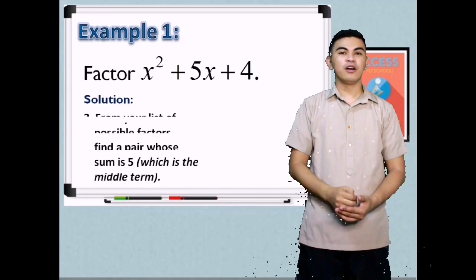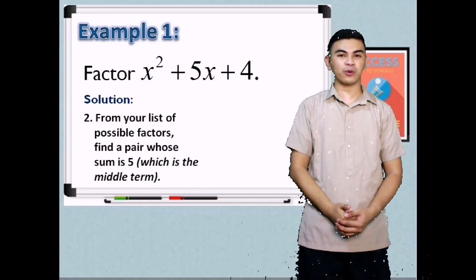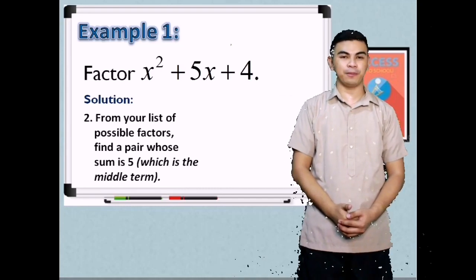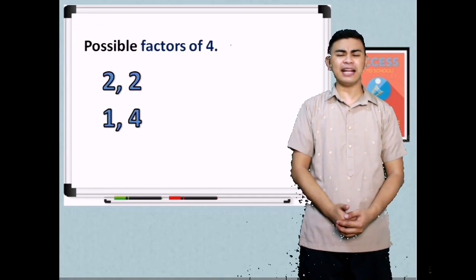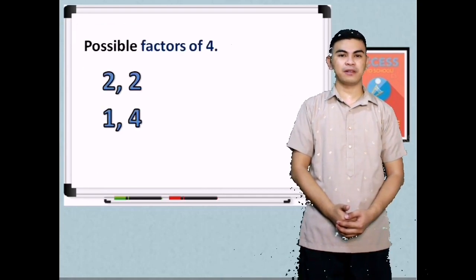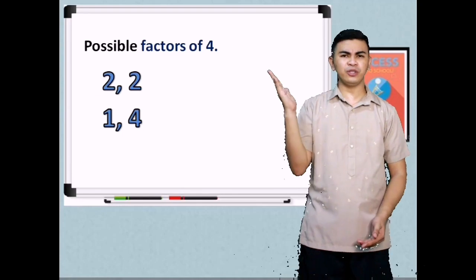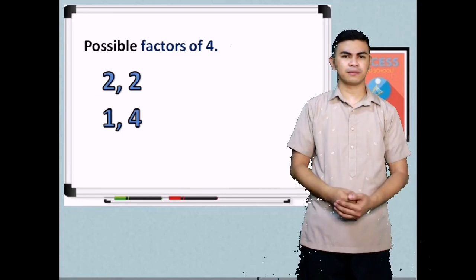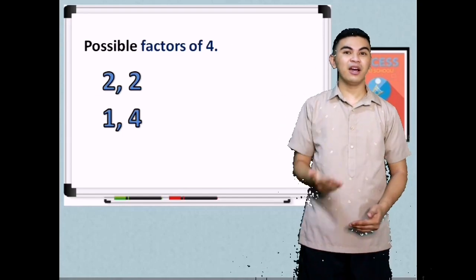Step 2, from your list of possible factors, find the pair whose sum is 5 which is our middle term. Which pair adds up to 5? Is it 2 and 2? Or 1 and 4? Let's see! 1 and 4.